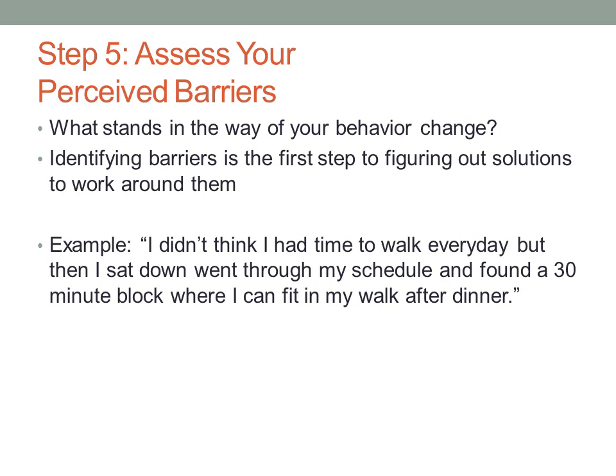Step five: assess your perceived barriers — what you might call your excuses, like being too tired or not having time. But not all perceived barriers are just excuses. It might be that you don't have a safe neighborhood to walk in or can't access a track or gym; in that case, another form of physical activity could be the solution. You can't figure out solutions until you identify the problems. In this example, I didn't think I had time for daily walks, but when I sat down with my planner I found time — I never would have known that if I'd just said I was too busy and left it at that.